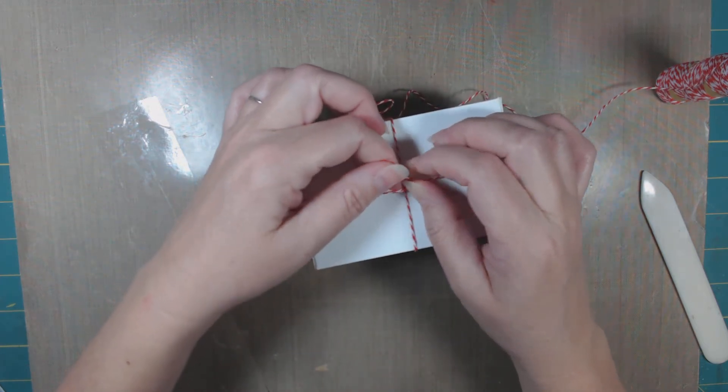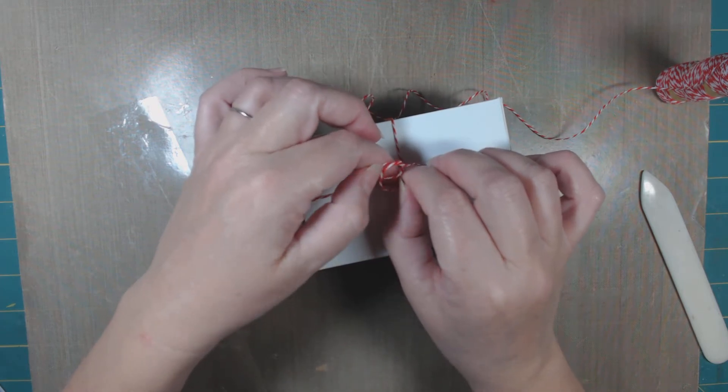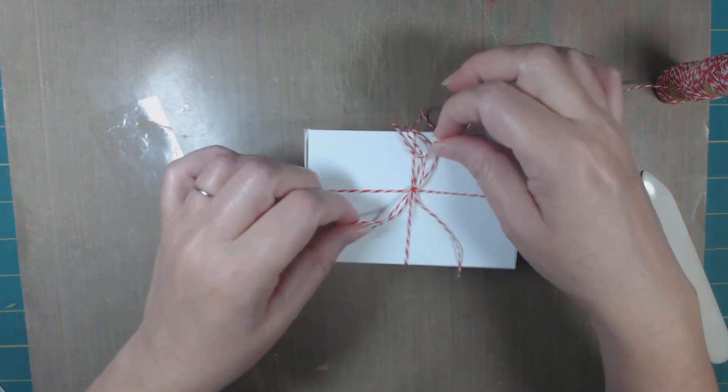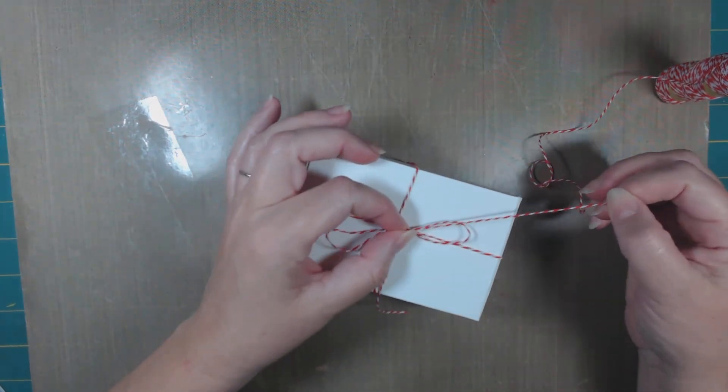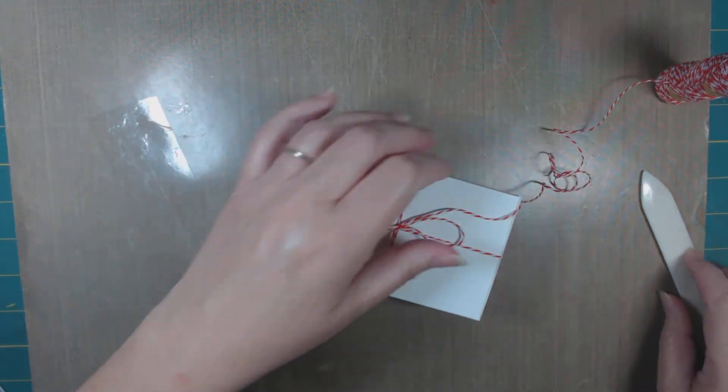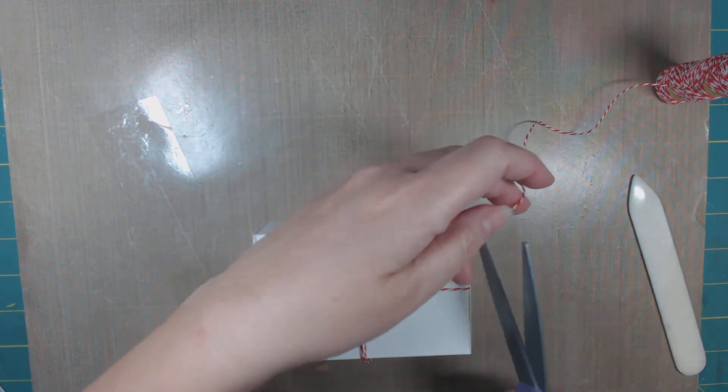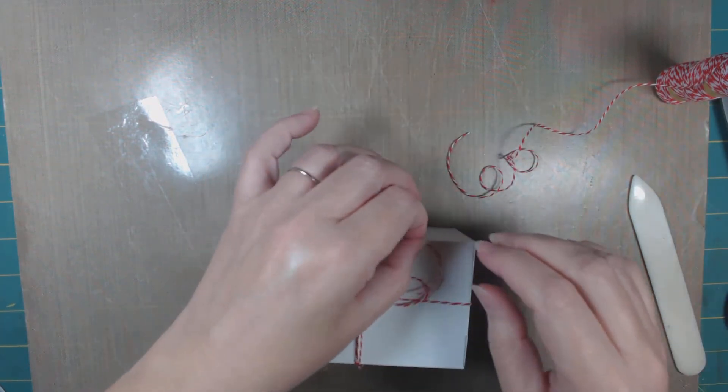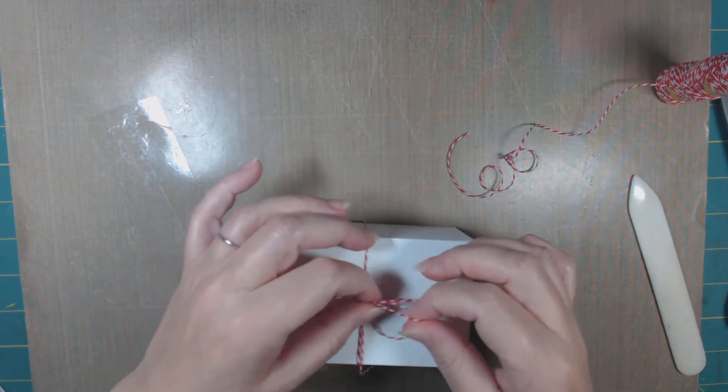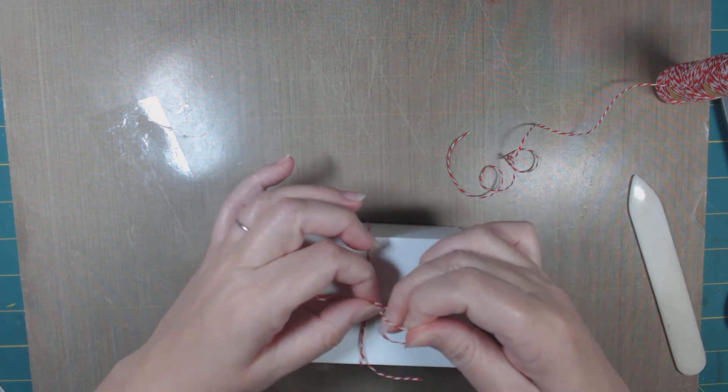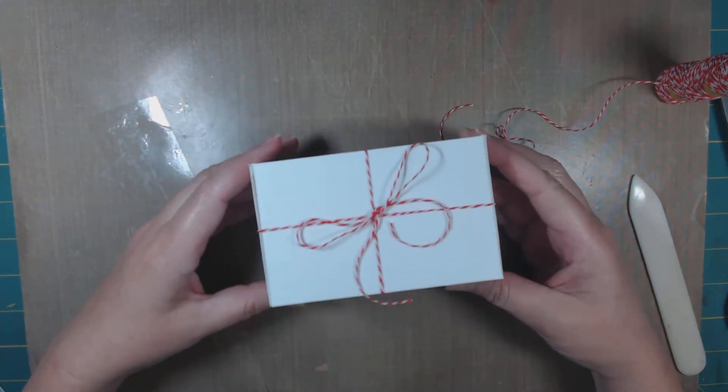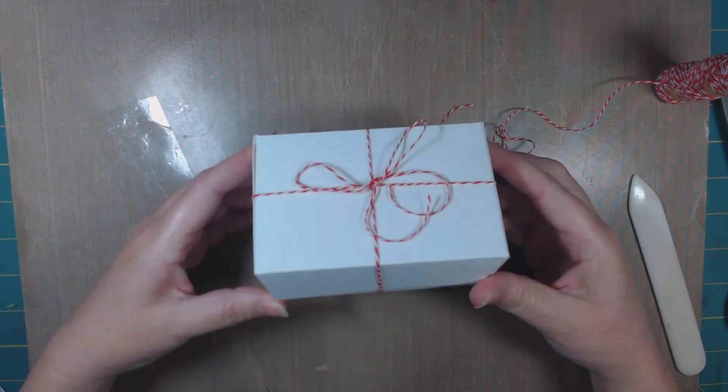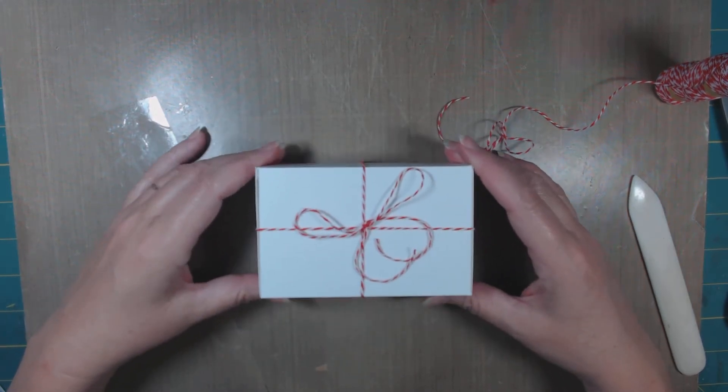There we go. And then you can tie your little bow on there. Oops, sorry, it's getting out of frame. And there's your bow. Take your scissors, cut off the excess. Sorry about that. There you go, and there's your little box, and it's got our little pumpkin pie slice in there. So quick and easy.